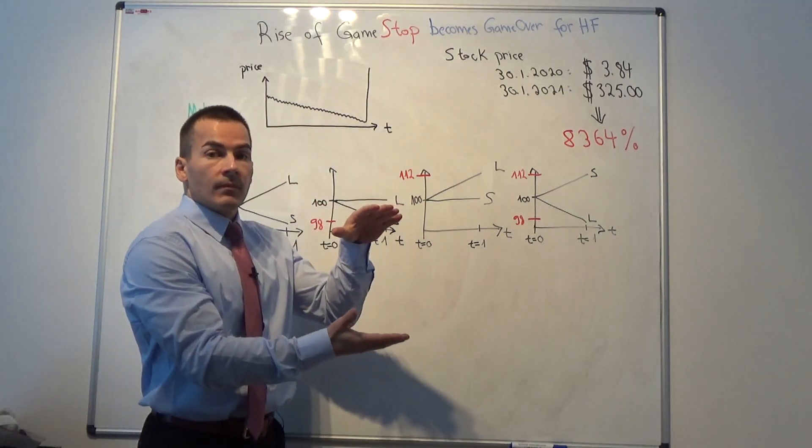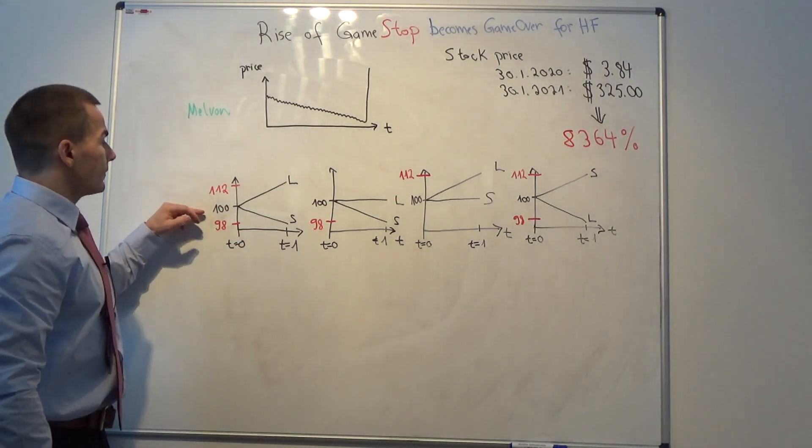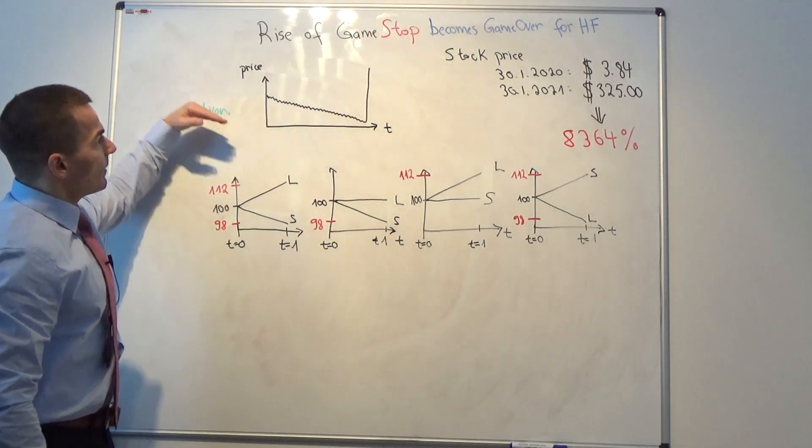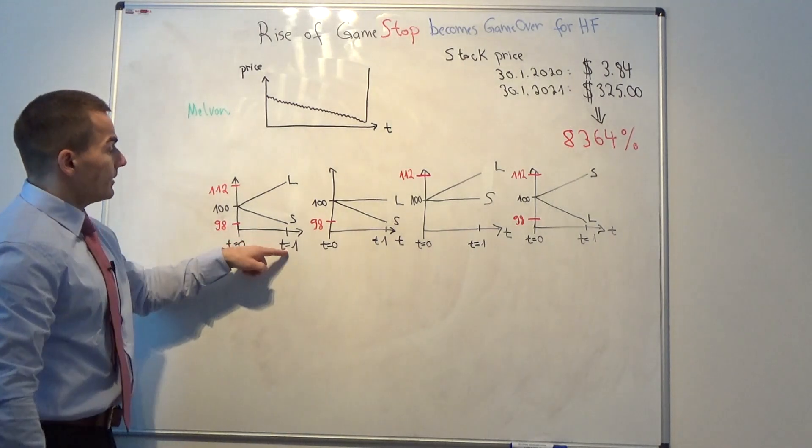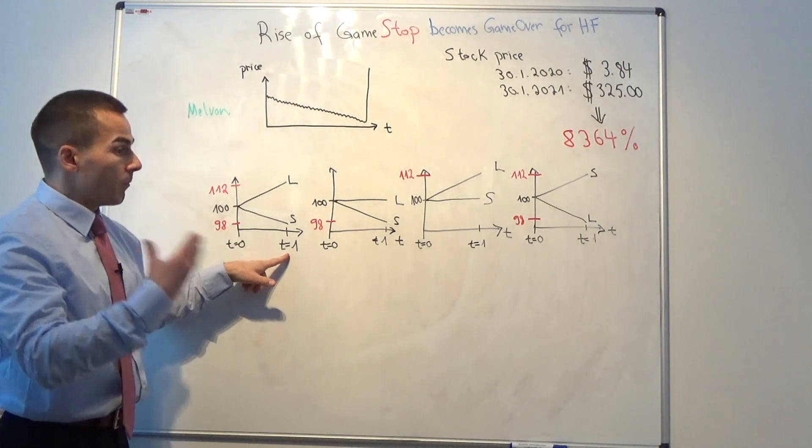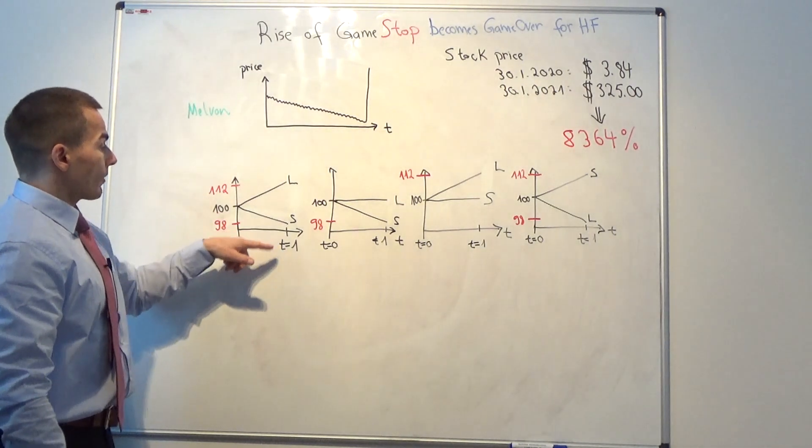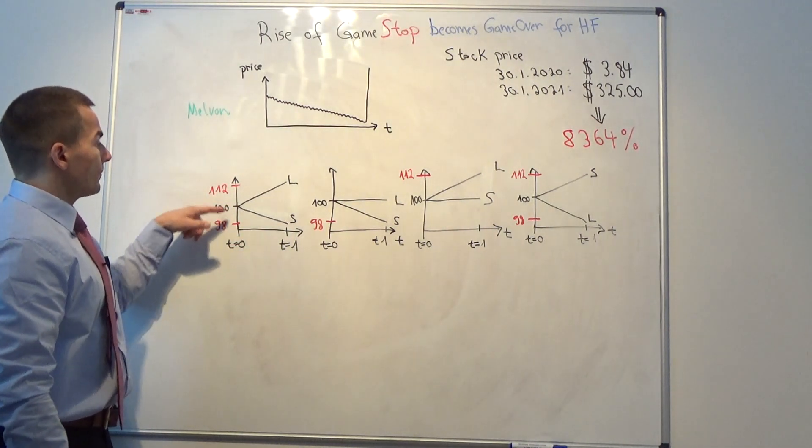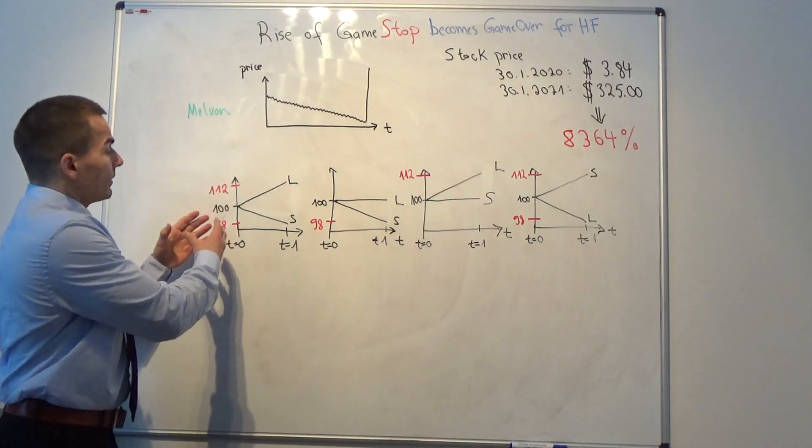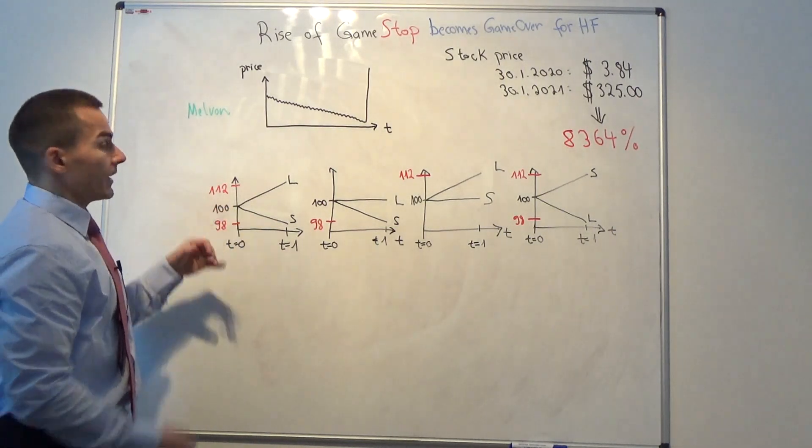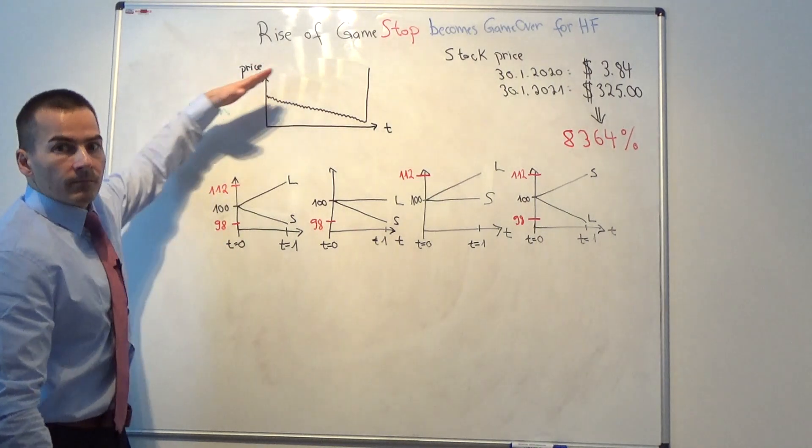And after let's say one year, they have to buy these stocks back. And the difference is then their profit. Now let's say we are here, let's consider this graph here on the left. So let's say the stock price is 100 and we are at time T is 0. Stock price is 100. So I expect that the stock price will decrease. So what I will do is, I will borrow this stock, sell it and at T is 1, when I have to give the stock back, I will buy it back and hopefully the stock price has decreased. As I expected and the difference between 100 and let's say the stock is traded at 98 at time T is 1, the difference of 12 is my profit.